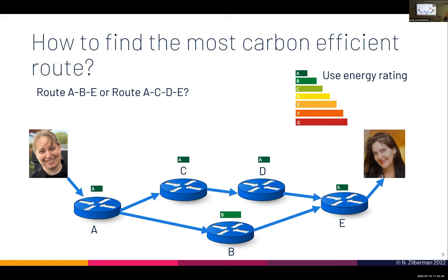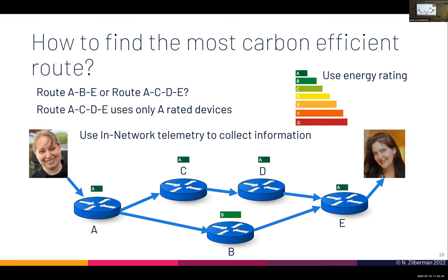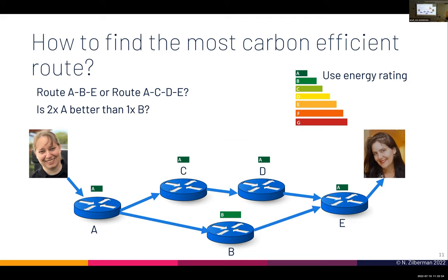The first thing we can do is have a sort of energy rating — the kind of energy rating that your fridge has. We need that for an A-star switch. So I can use in-network telemetry to collect information about the energy rating of the devices. But if I can pick a route using only A-rated devices, would it be better to go through two switches with an A rating than one switch with a B rating? Obviously that's not enough.